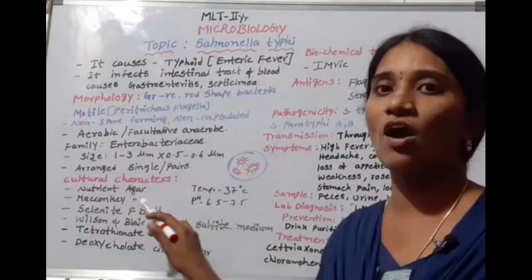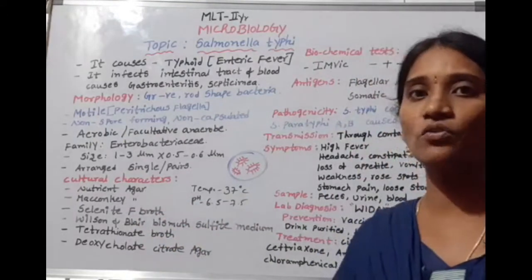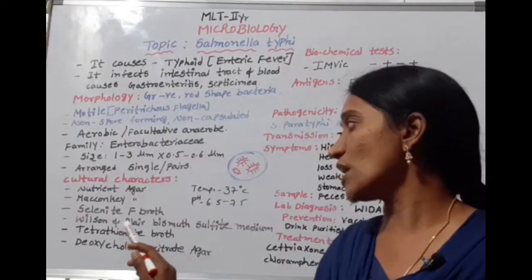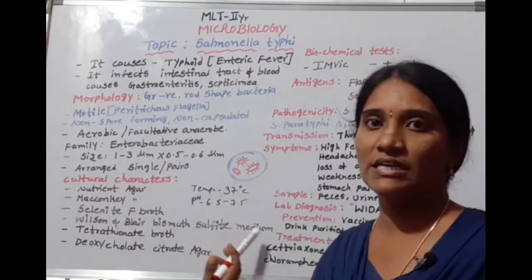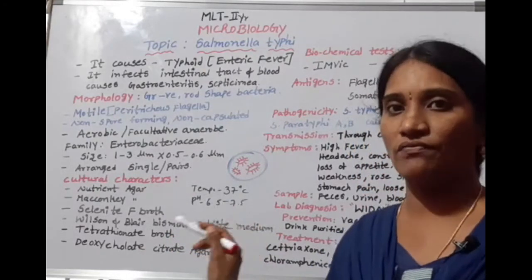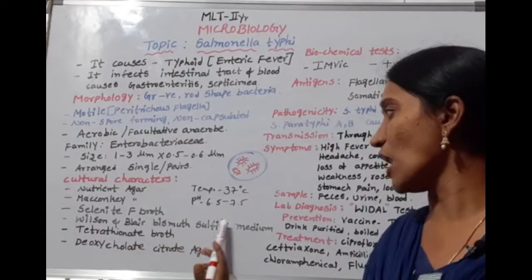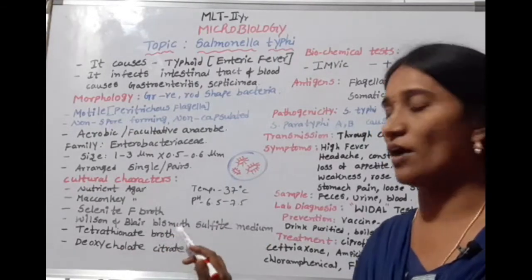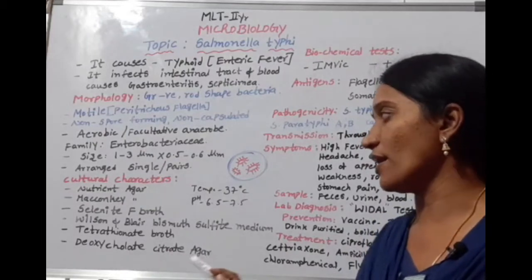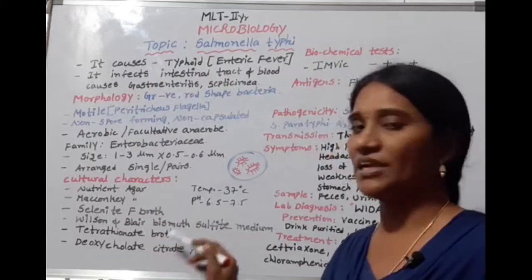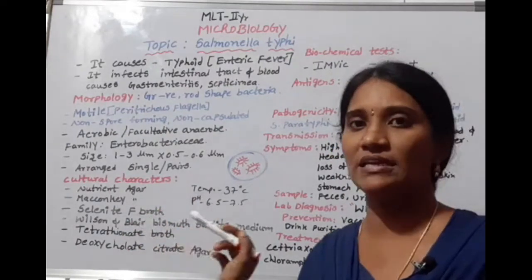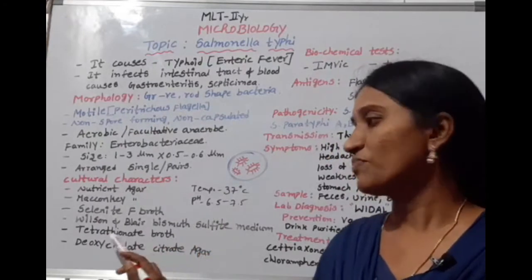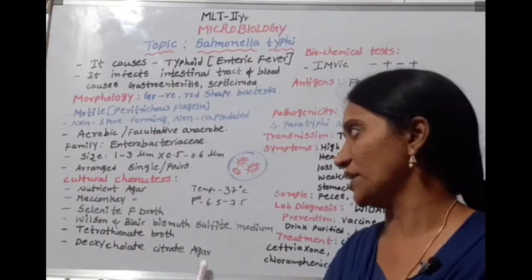The cultural characters: growth occurs on nutrient agar and MacConkey agar. The selective media for Salmonella typhi include Selenite F-broth (a liquid medium), Wilson-Blair Bismuth Sulfite medium (a very important selective medium), Tetrathionate broth, and Deoxycholate Citrate Agar. These media provide essential nutrients for the growth of Salmonella typhi.